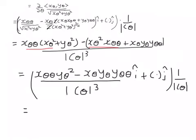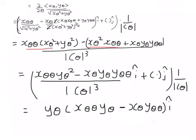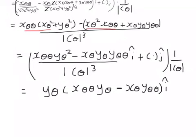We can factor out y_θ and write the i component as (x_θθ·y_θ − x_θ·y_θθ)·x_θθ. We can also guess — rather, derive — what the j component looks like by interchanging the y's and x's.